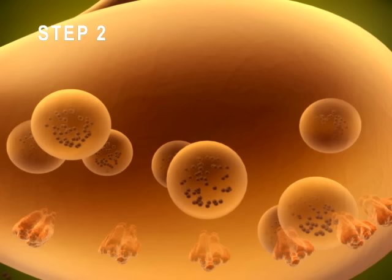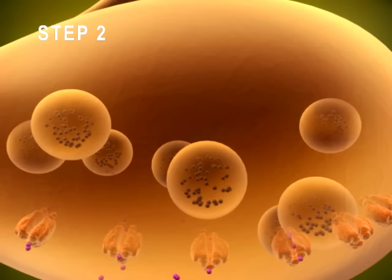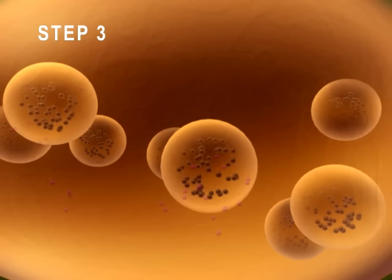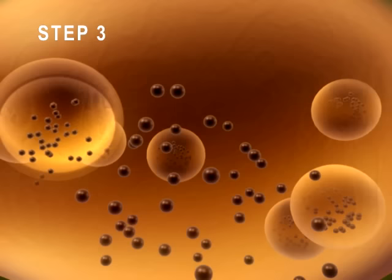Step 2: Voltage-gated calcium channels open and calcium ions diffuse into the terminal. Step 3: Calcium entry causes synaptic vesicles to release acetylcholine via exocytosis.